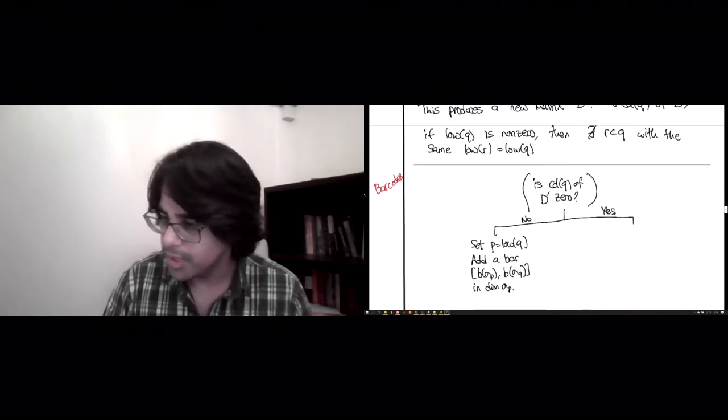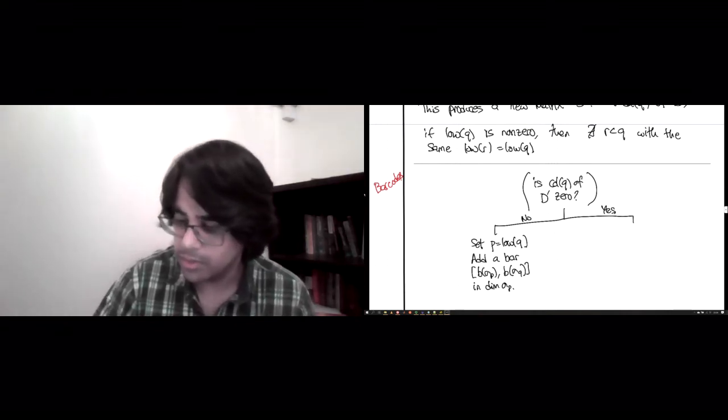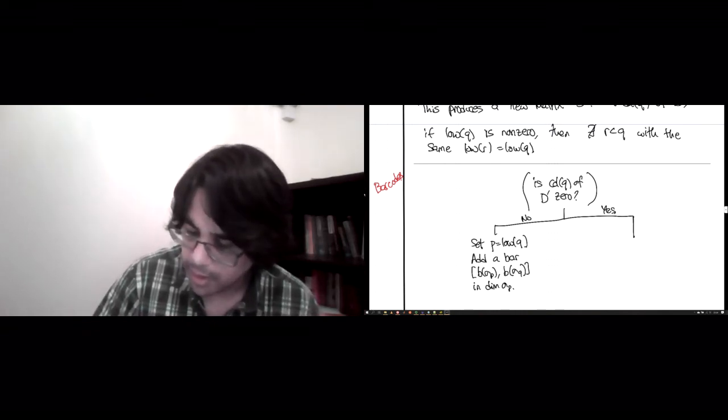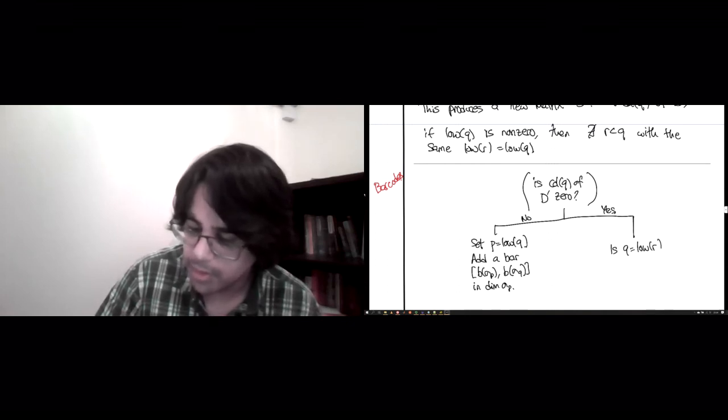so that was pretty easy. Obviously, if the column is zero, then there's a bit more that one has to do. Here now there are two options, which are as follows. So is Q itself the low of something, some other column? And now,